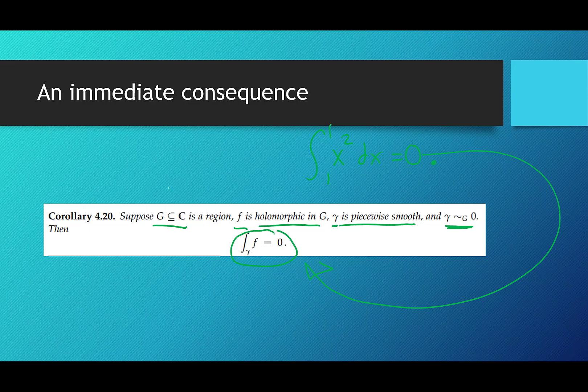Again, this is region-specific, so be careful. Don't be quick to say 'it's a closed path, so it's automatically contractible.' Be very careful about your region and your function — the function has to be holomorphic in that region. You have to balance your path with your function's domain. It's kind of a balance game.